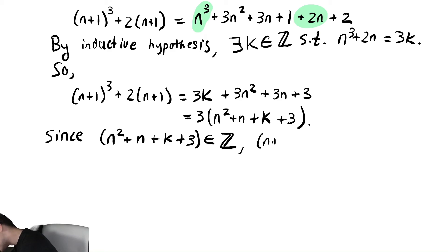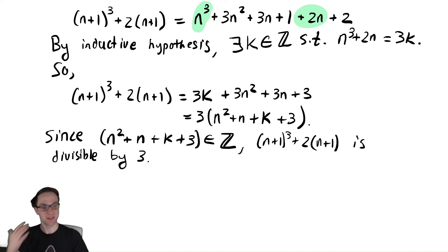(n+1)³ + 2(n+1), the thing we started with, is divisible by 3. Therefore using our inductive hypothesis just like we did before we've shown that P(n+1) is true, therefore the original statement must be true for every value of n by mathematical induction. So the result follows